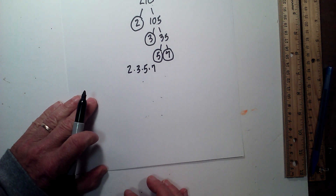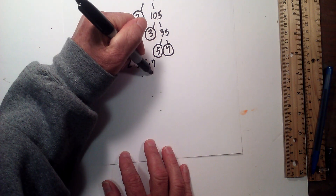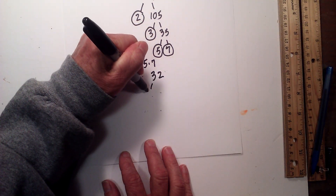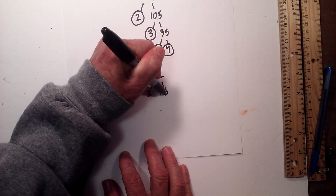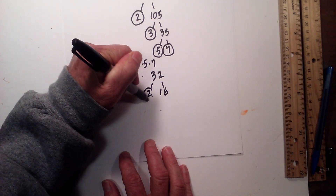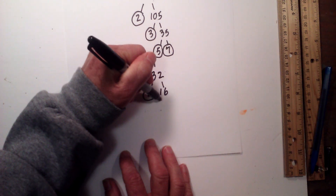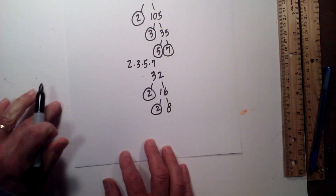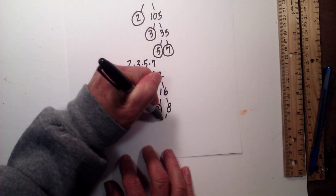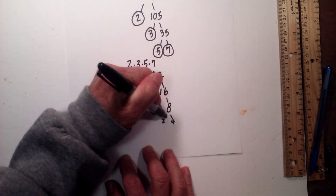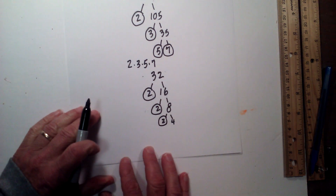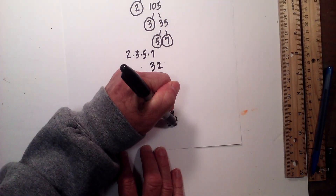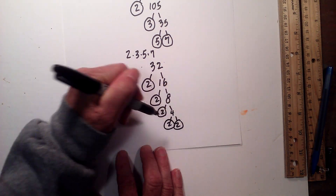Next I will find the prime factors of 32 — it is interesting as you will see. I will begin with 2 times 16 equals 32; circle the 2 because it is prime. Next, 2 times 8 — circle the 2 because it is prime. Now 2 times 4 equals 8; circle the 2 because it is prime. And then 2 times 2 equals 4.